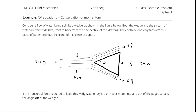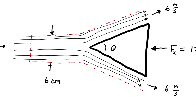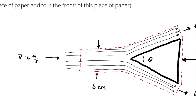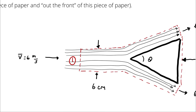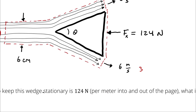I recognize that I have a force in the x-direction, which means I'm going to care about the x-component of conservation of momentum. I don't have a control volume defined, so I will define my own. I'm going to call my inlet state 1, the top outlet state 2, and the bottom outlet state 3.